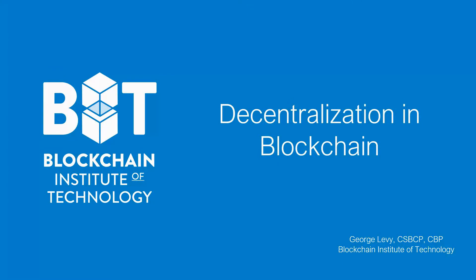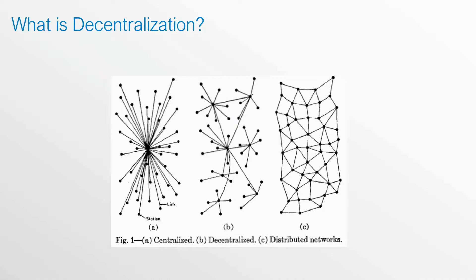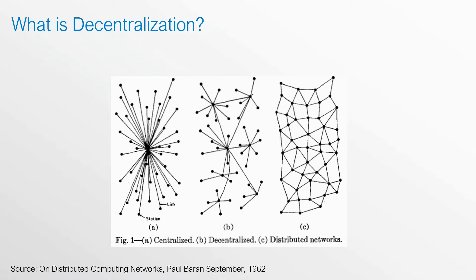Let's talk about decentralization as it applies to blockchain. To begin, I'd like to share with you a diagram that you may have already come across when you've done research on decentralization. In the diagram you see centralized versus decentralized versus distributed networks. People often think this diagram is also talking about a decentralized blockchain. But what you need to take into context is that this graphic is actually taken from a white paper published in 1962 by Paul Baran, called Undistributed Computing Networks. So what you're seeing is centralized versus decentralized versus distributed computing networks, not blockchains.